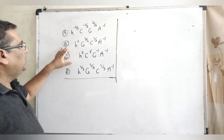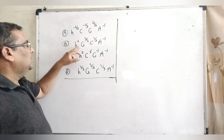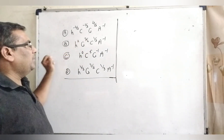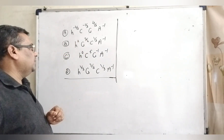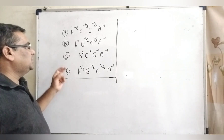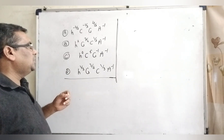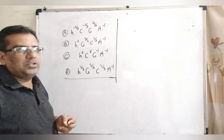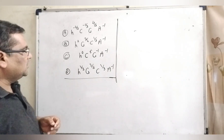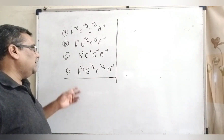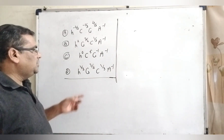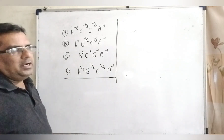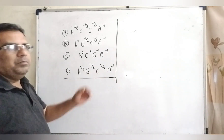Option B: h², G raised to power 3/2, c raised to power 1/3, and A raised to power −1. Option C: h raised to power 0, c raised to power 5, G raised to power −1, A raised to power −1. And Option D: h raised to power 1/3, G raised to power 2/3, c raised to power 1/3, and A raised to power −1.